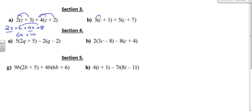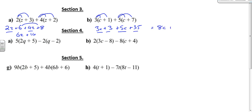Then we do it with these ones. So 3 times c is going to be 3c. 3 times 1 is going to be plus 3. 5 times c is going to be 5c. 5 times 7 is going to be plus 35. Then you simplify it. So 3c plus 5c is going to be 8c. 3 plus 35 is going to be 38.